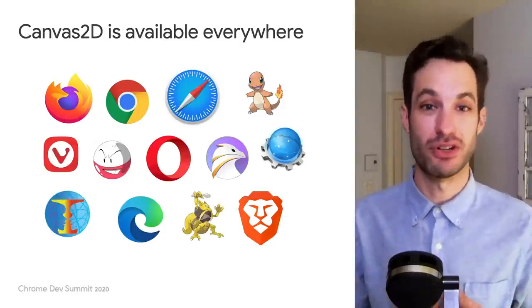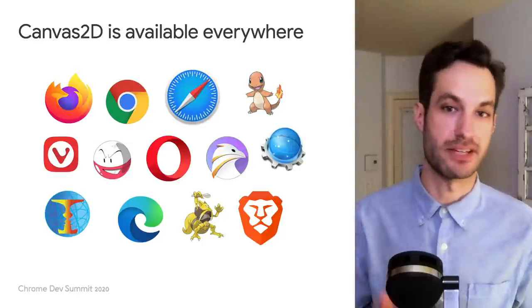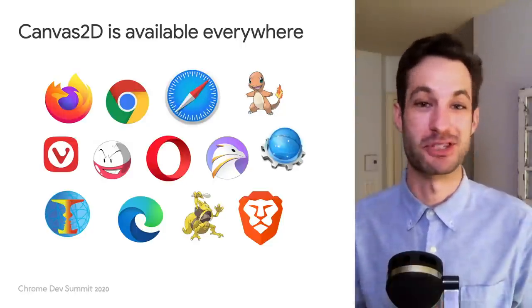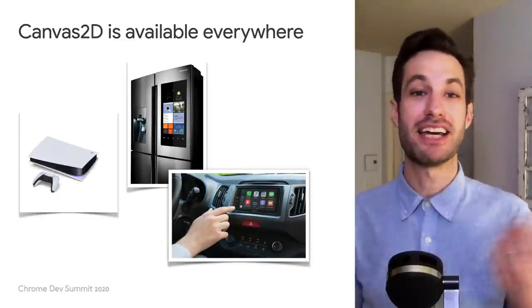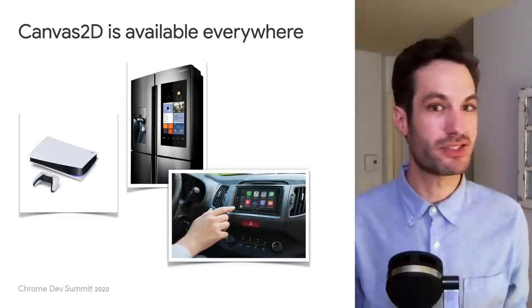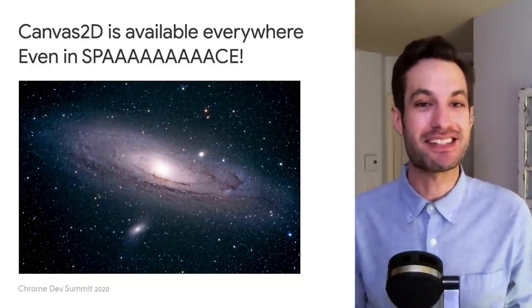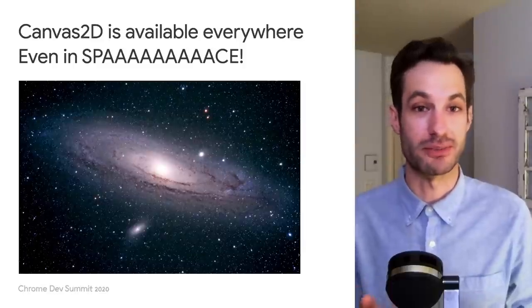Canvas 2D has been around since forever — forever in internet years. The oldest spec I could find was from 2005, so the Chrome T-Rex wasn't even around then. It's supported in Firefox, Chrome, Safari, Opera, Edge, Conqueror, Vivaldi, Brave, Seamonkey, and many more — and the astute among you will mark when I stopped naming obscure web browsers and started naming Pokémon. Canvas 2D is available on devices from car consoles to refrigerators to PlayStations. It's even available in space — really. SpaceX's Dragon Capsule's interface is rendered using Chromium and JavaScript. The point is, it's everywhere.